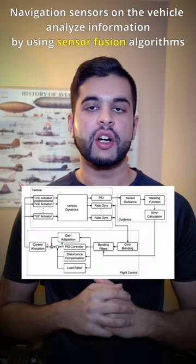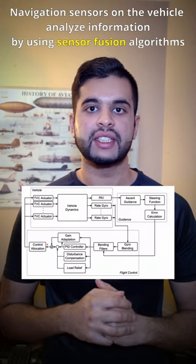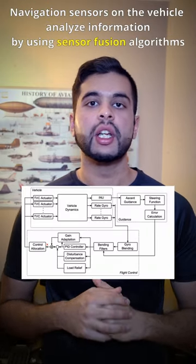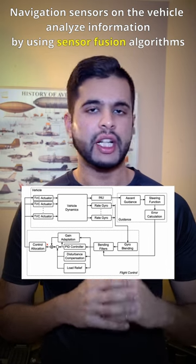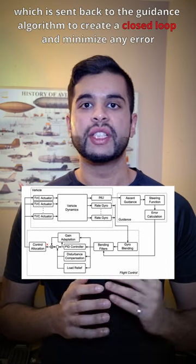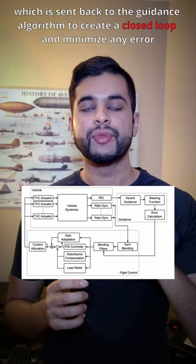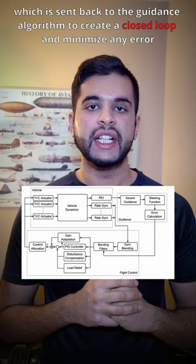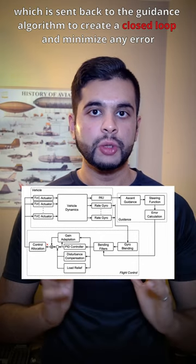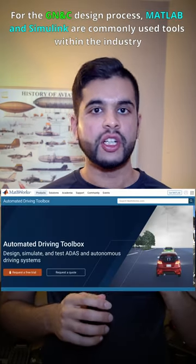Navigation sensors on the vehicle analyze information using sensor fusion algorithms, which is sent back to the guidance algorithm to create a closed loop and minimize any error.